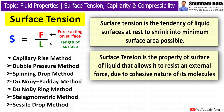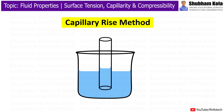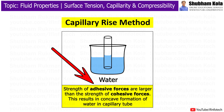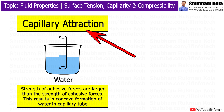There are various methods used to measure the surface tension of a liquid. The capillary rise method uses a tube with a very short and uniform radius, called a capillary tube, which is dipped into the liquid to be tested. In the case of water, the strength of adhesive forces is larger than the strength of cohesive forces, which results in a concave formation of water in the capillary tube. This is called capillary attraction.